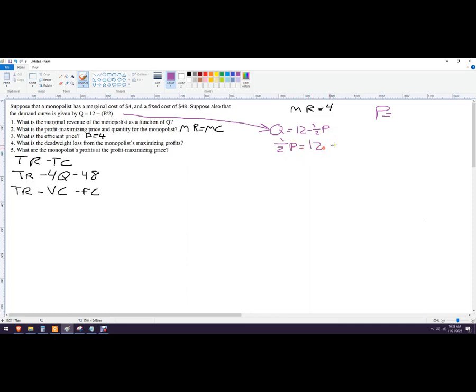So I've got Q equals 12 and then it's got P over 2. What I like better is one half P. This is the same thing. So I'm going to move that over there, one half P equals 12 minus Q. And then I need to multiply, really divide everything by one half, which is like multiplying by two. So if I multiply everything by two, this goes away and this would be 24, and then this would be two Q. So these are the same thing.